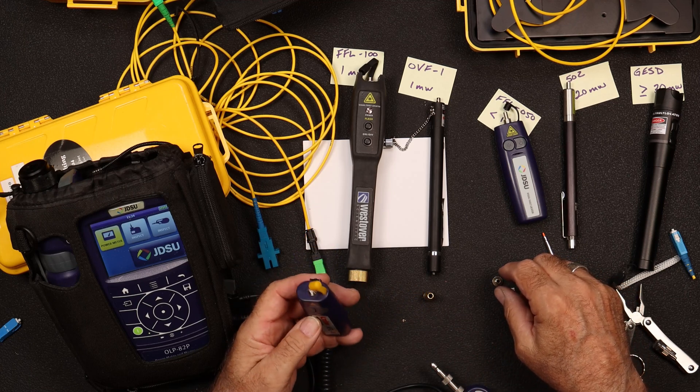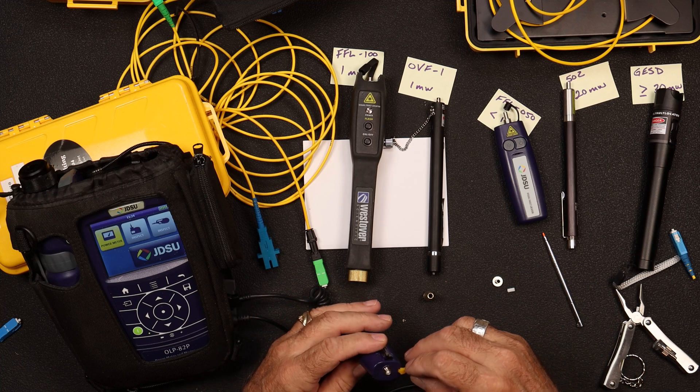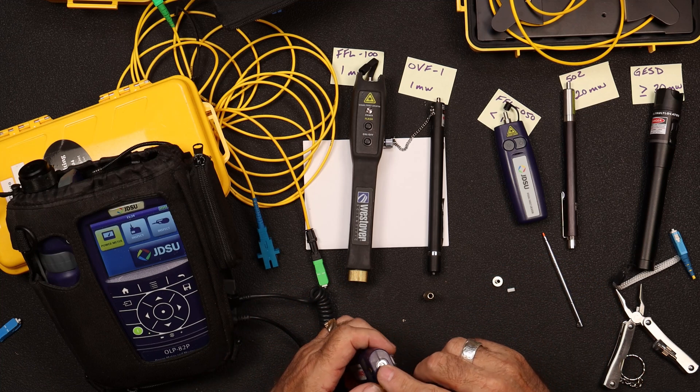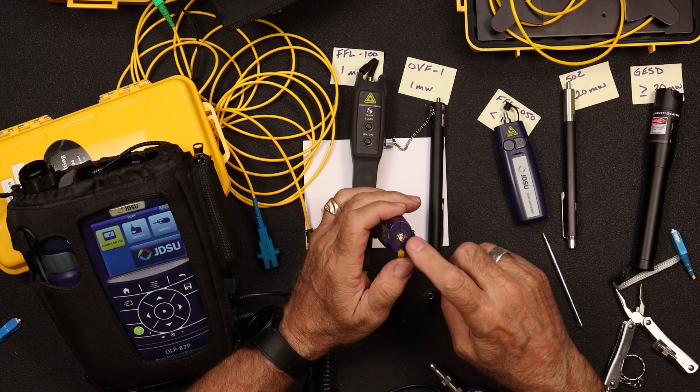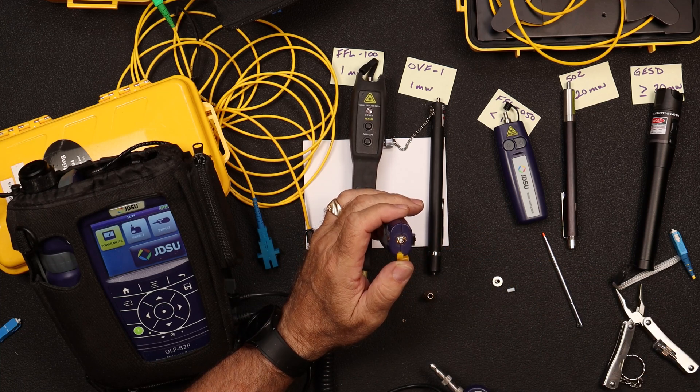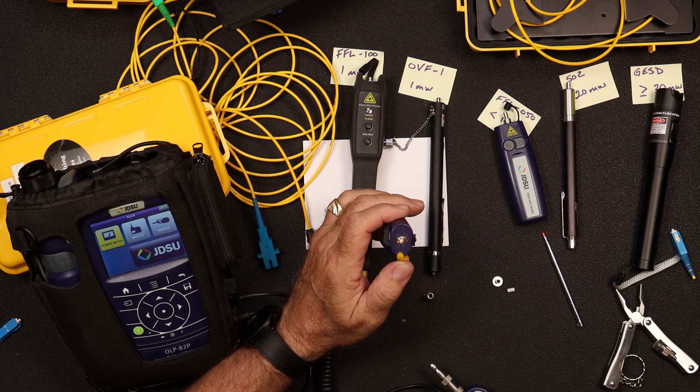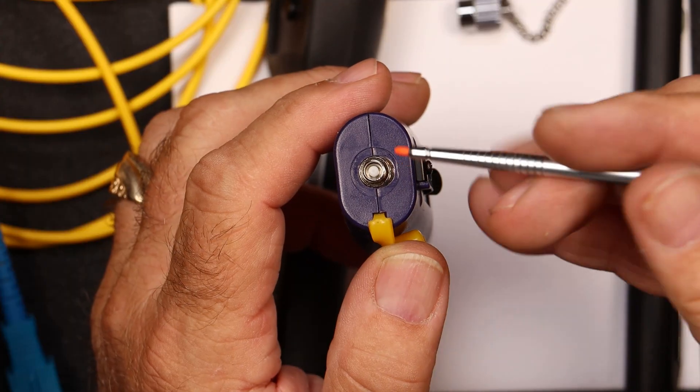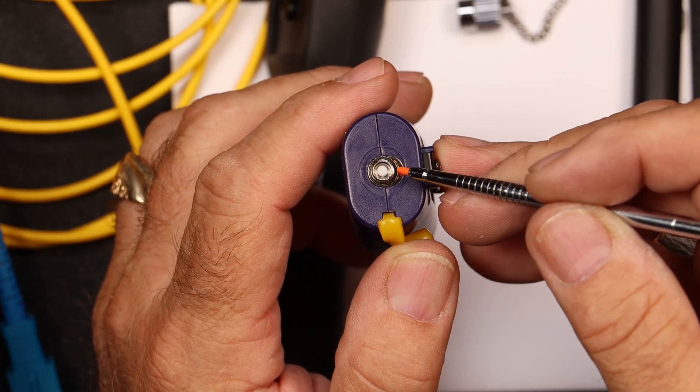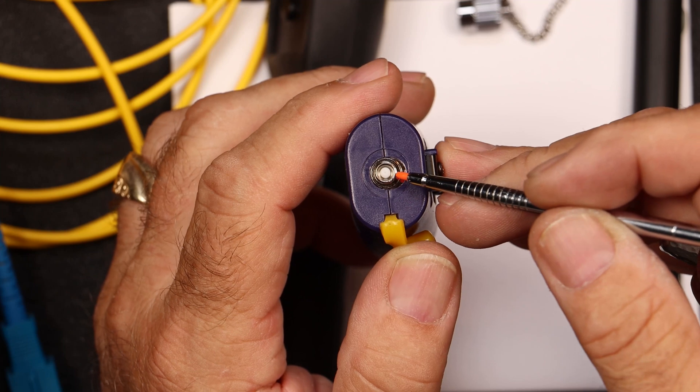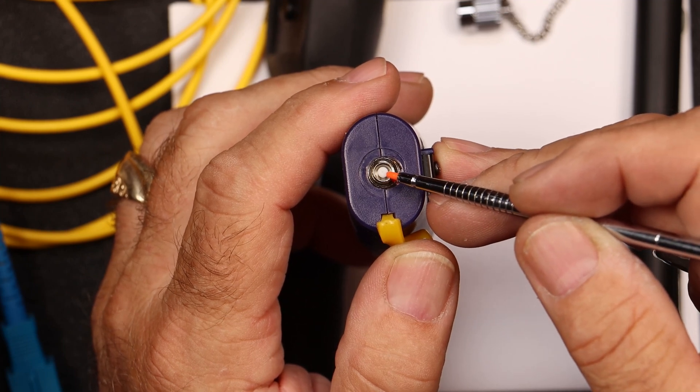And so basically, most people don't understand that these are actually a ferrule connection. So down inside here, there is a ferrule that we have to worry about or concern ourselves with. So if you look at this, this is the fitting. This is actually the laser on a little board there. And inside here, we do have a ferrule.